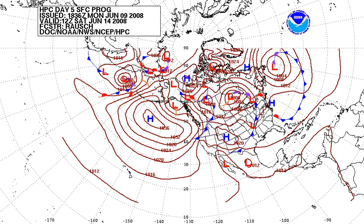For higher altitudes within the troposphere, the following equation relates atmospheric pressure P to altitude H.